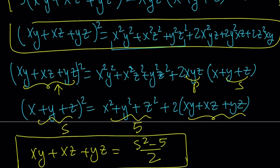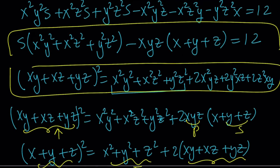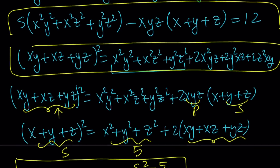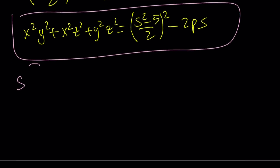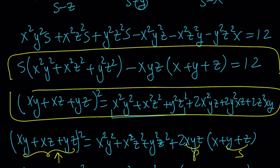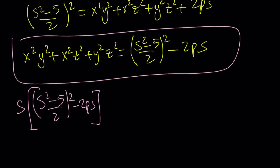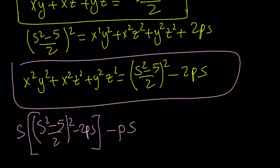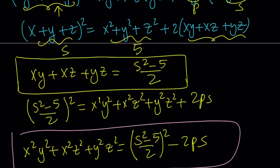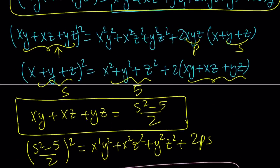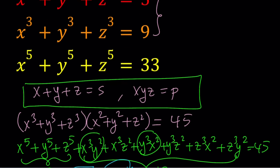But this has two variables, so I need another equation. For that I'm going to use the sum of cubes. We're given x cubed plus y cubed plus z cubed, and there's an identity: x cubed plus y cubed plus z cubed minus 3xyz equals (x plus y plus z)(x squared plus y squared plus z squared minus xy minus xz minus yz). This is also used to prove that if x plus y plus z equals 0, then x cubed plus y cubed plus z cubed equals 3xyz, which is often used in math competitions.